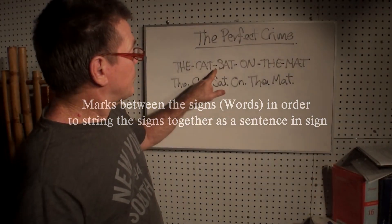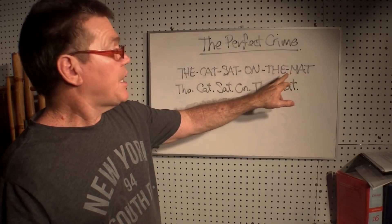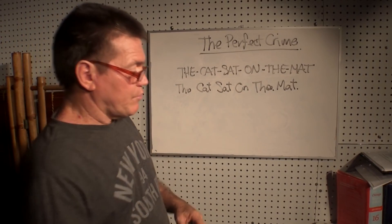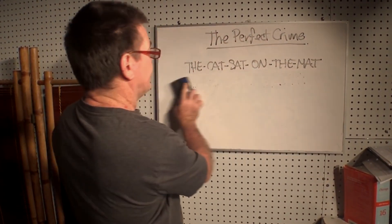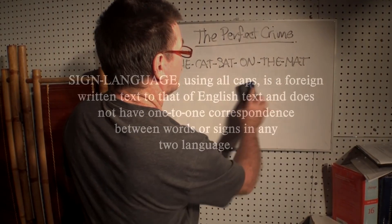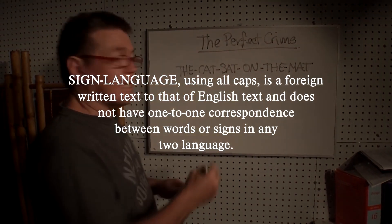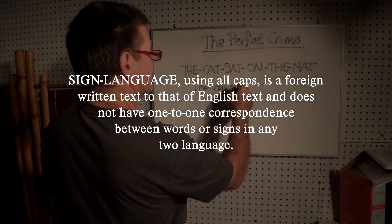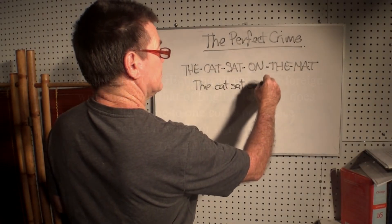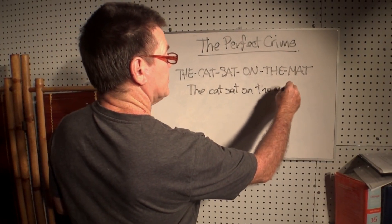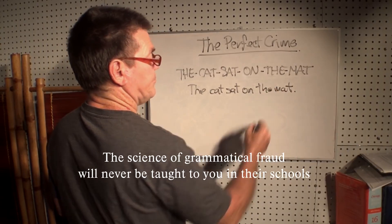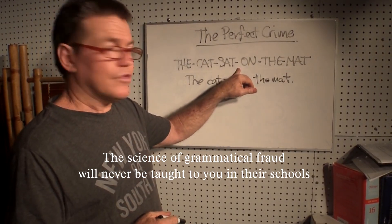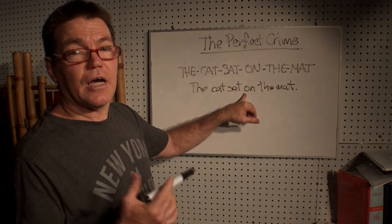So when you know the truth — when you write 'the cat sat on the mat' and you put the hyphens in between — it actually strings together into a sentence in a whole new way. So when you know the truth, you can detect a lie.